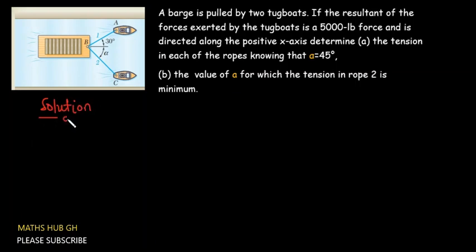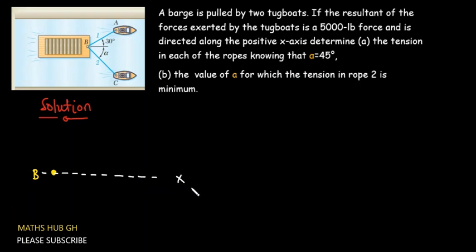I'm going to draw the free body diagram for this system. Let's take this to be point B, and let this represent the x-axis. From the question, we've been told that the resultant force is directed along the positive x-axis, so the resultant force is going to be in this direction. This is the 5000-pound force.